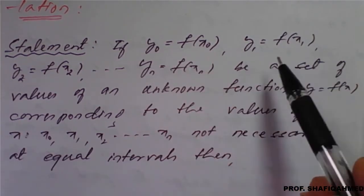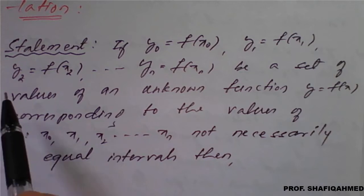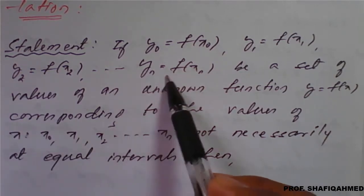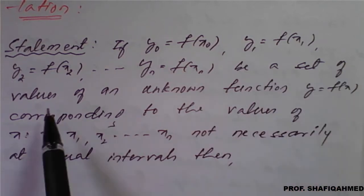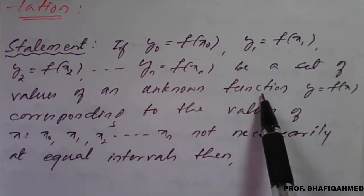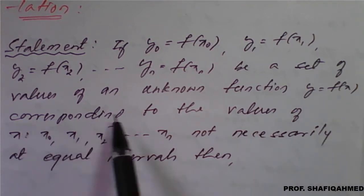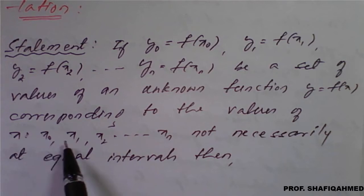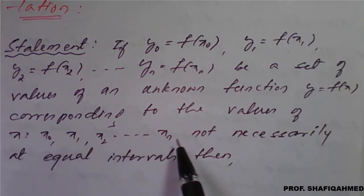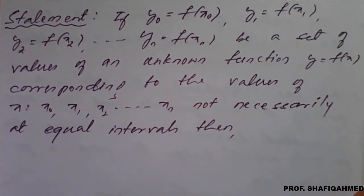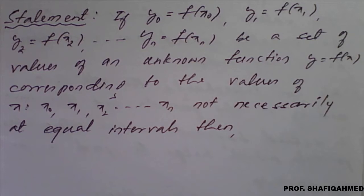If y0 is equal to f of x0, y1 is equal to f of x1, y2 is equal to f of x2, and so on, yn is equal to f of xn, be a set of values of an unknown function y equal to f of x, corresponding to the values of x, that is x0, x1, x2, and so on xn, not necessarily at equal intervals. This method is useful for unequal intervals as well as equal intervals.